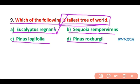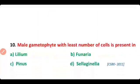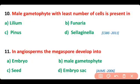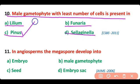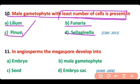Question 10. Male gametophyte with the least number of cells is present in: Lilium, Funaria, Pinus, or Selaginella? The correct answer is option C. The male gametophyte with the least number of cells is present in Pinus.